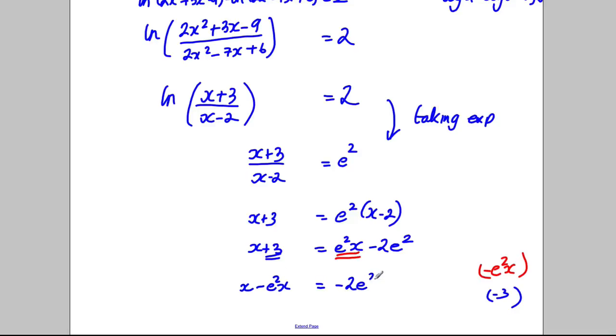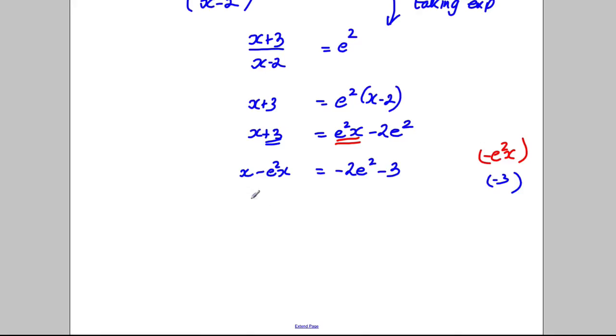Can factorize x, so I have (1 - e²)x equals -2e² - 3. So x is going to be (-2e² - 3) all divided by (1 - e²).